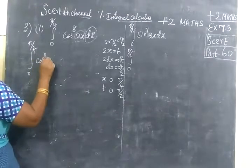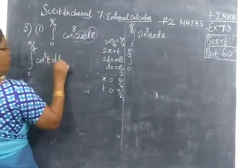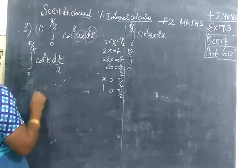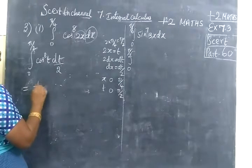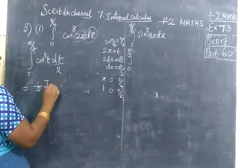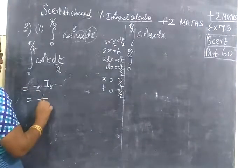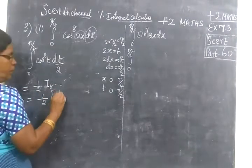Now cos power 8, 2x is equal to t. That I know it is dt by 2. So this can be written as 1 by 2, I_8. 1 by 2, I_8. Now we substitute the formula. 1 by 2, I_a is the kernel formula.